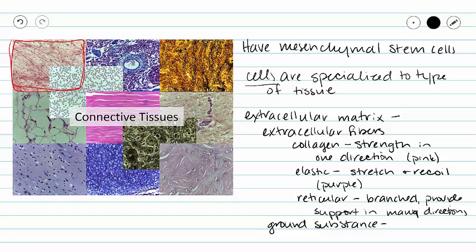Our ground substance is going to be the fluid filling in all of the spaces between the cells and the fibers. This fluid can be very water-like or it can be gel-like depending on the tissue and the function required of that tissue. Now that we have a nice introduction to connective tissues, let's take a look at areolar tissue.